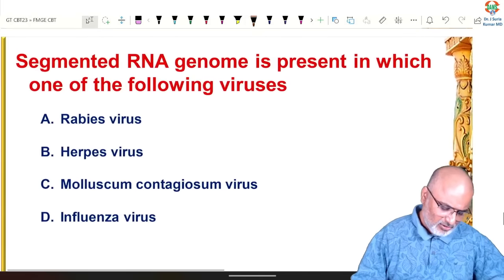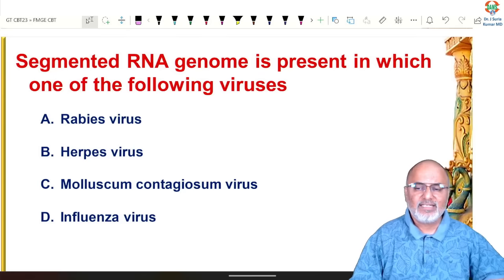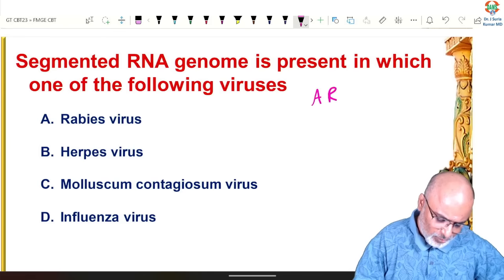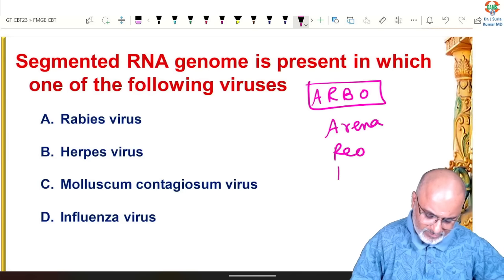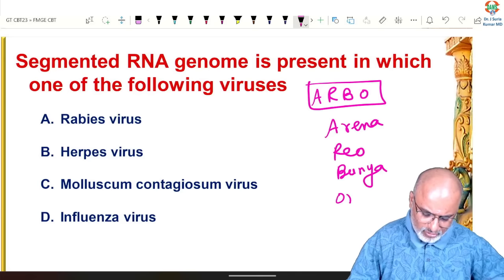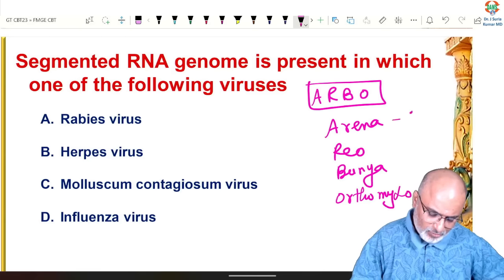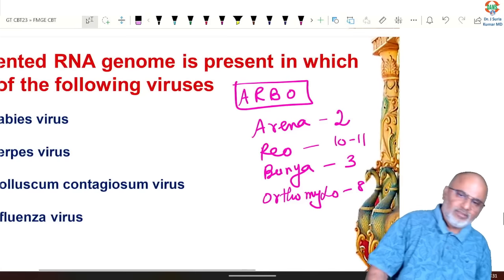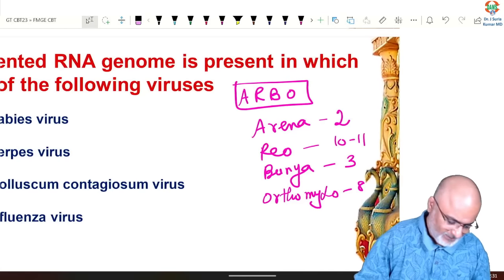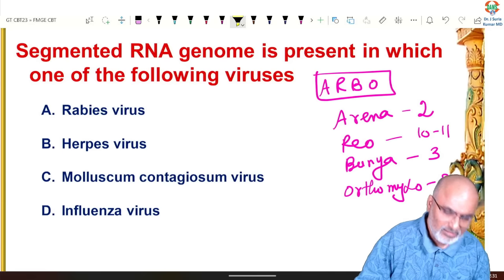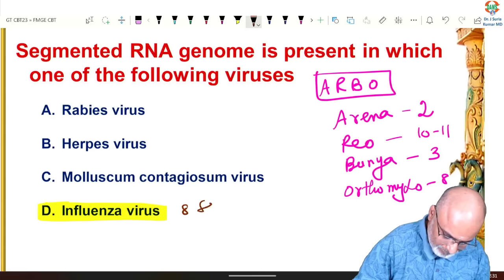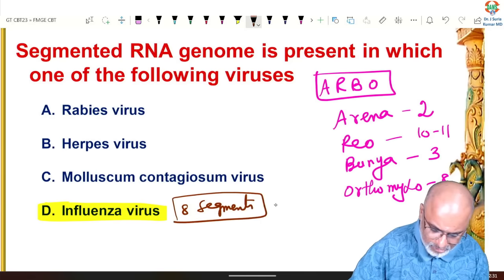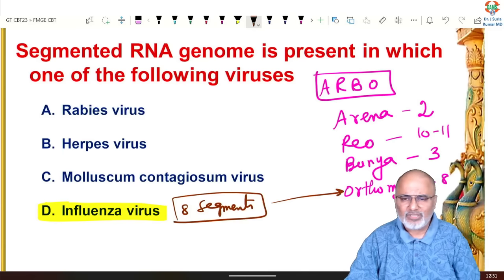Next: segmented RNA genome is present in which viruses? The mnemonic is ORBO — Arenaviridae (2 segments), Bunyaviridae (3 segments), Orthomyxoviridae (8 segments), Reoviridae (10-11 segments). The segmented RNA genome in the question's context is seen in influenza virus — orthomyxovirus — with 8 segments. Rabies, herpes, and molluscum do not have segmented RNA.